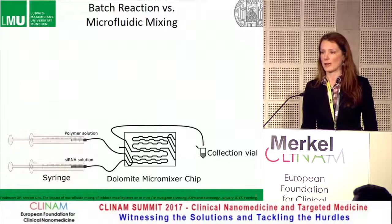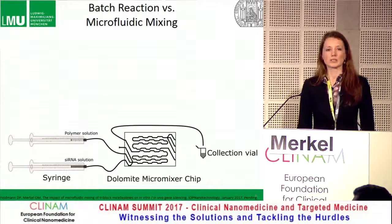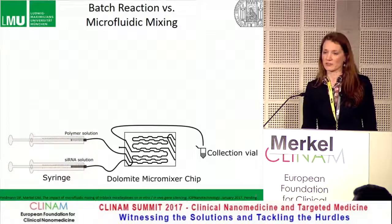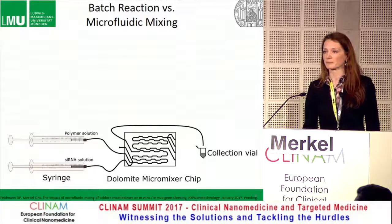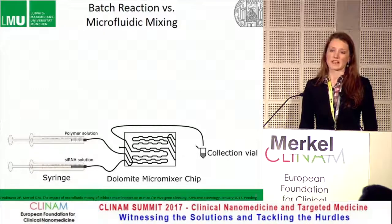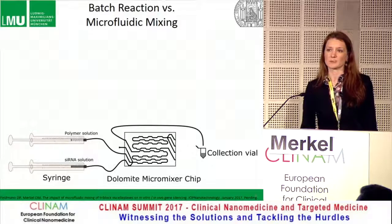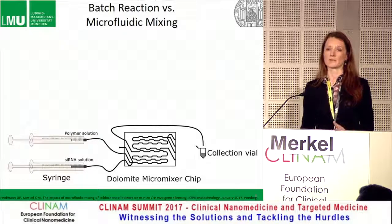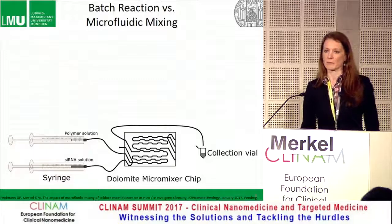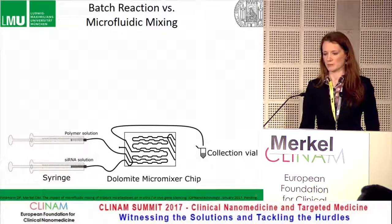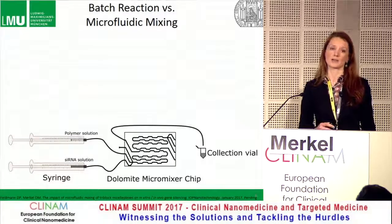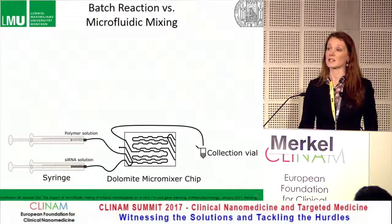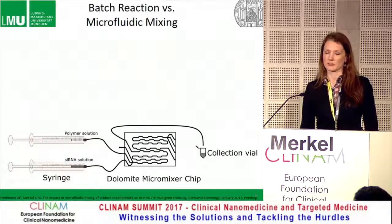We tried three different microfluidic setups. We initially made our own chips by nanolithography, but we weren't able to make the herringbone structure that Precision and Dolomite have in their chips. We eventually demoed the NanoAssembler but decided the Dolomite chip gives us more flexibility to use our own pumps without purchasing the pump from the company. All the data shown here was done with the Dolomite micromixer, and we found no significant differences between the NanoAssembler and Dolomite formulations.